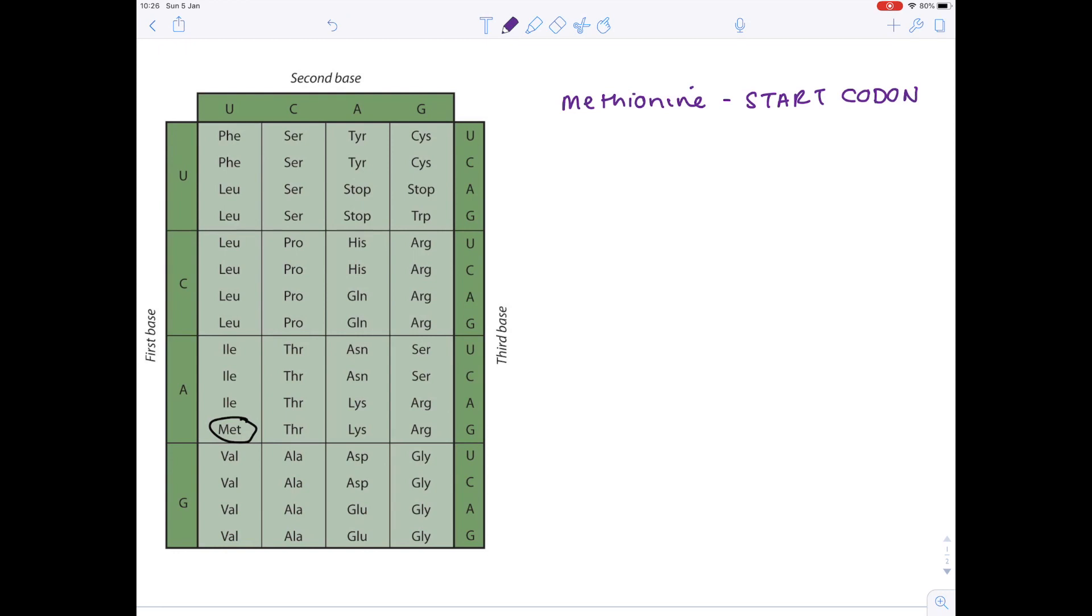And we can use the table to work out what codon is required to generate the amino acid methionine. And we're basically doing a reverse of the steps. So we can see from methionine that the third base will be G. We can see from methionine, because we're focusing in on this box, that the second base will be U. And then lastly, because we're in this box, we can see that the first base will be A. So AUG is the start codon and codes for the amino acid methionine.